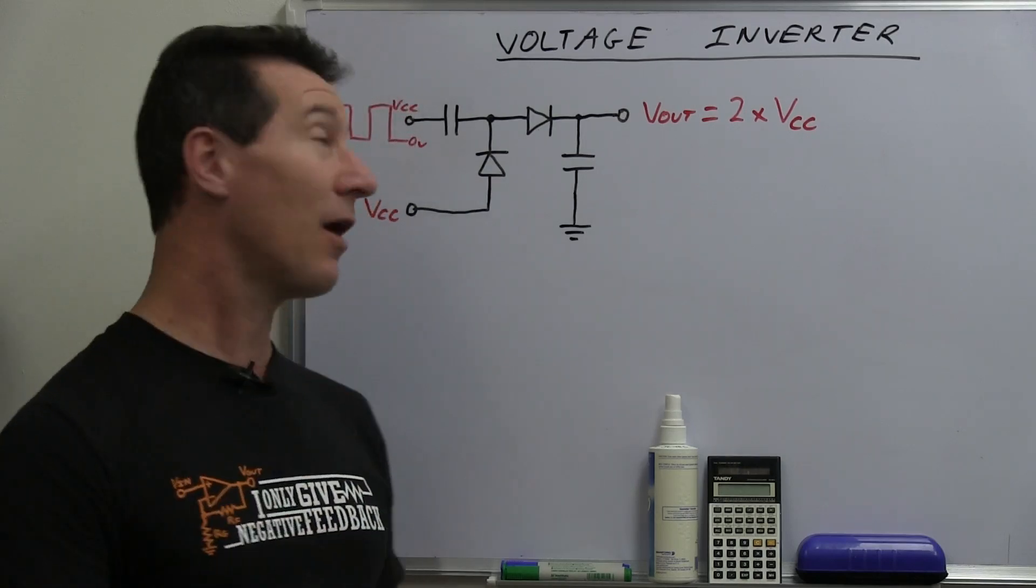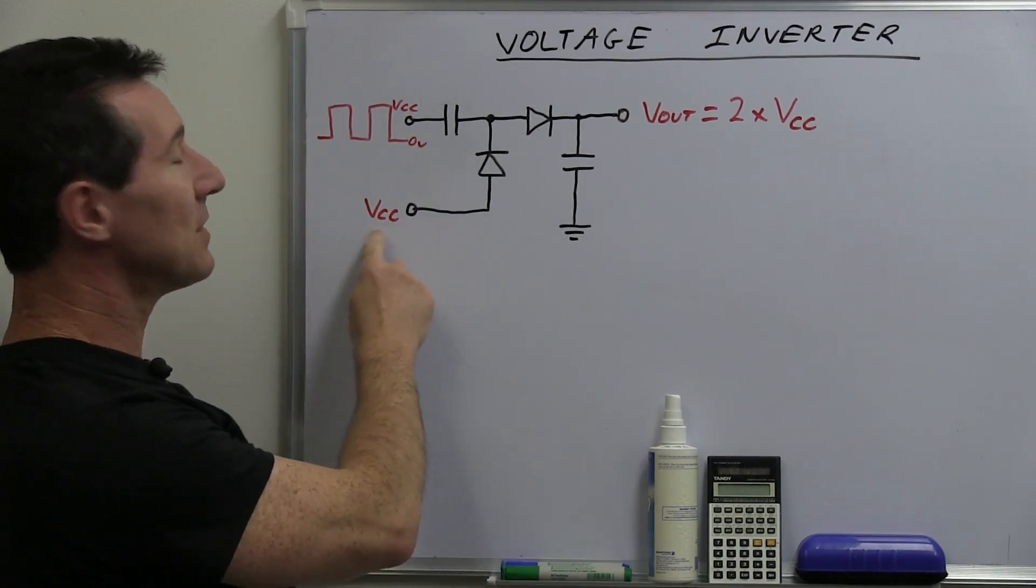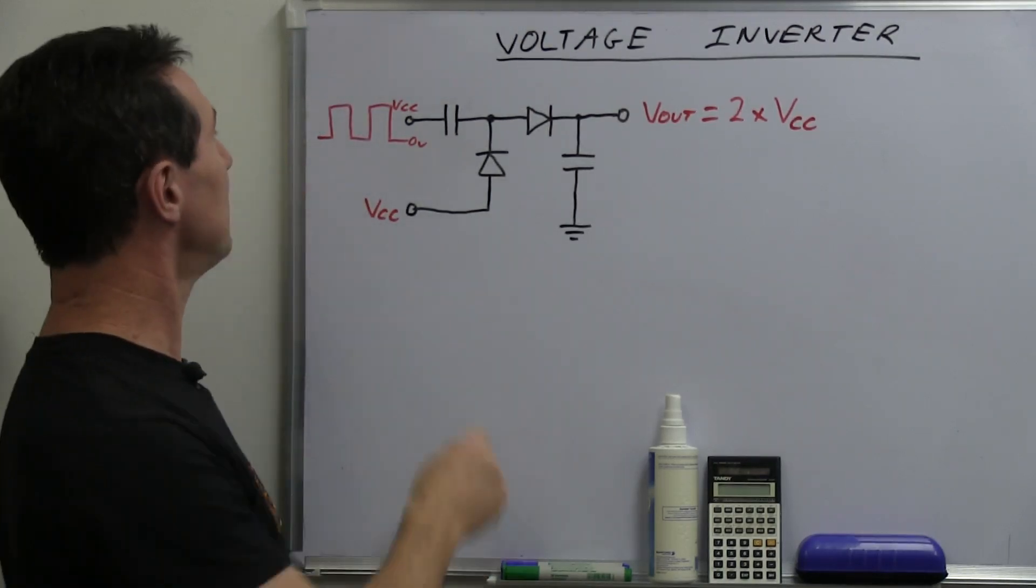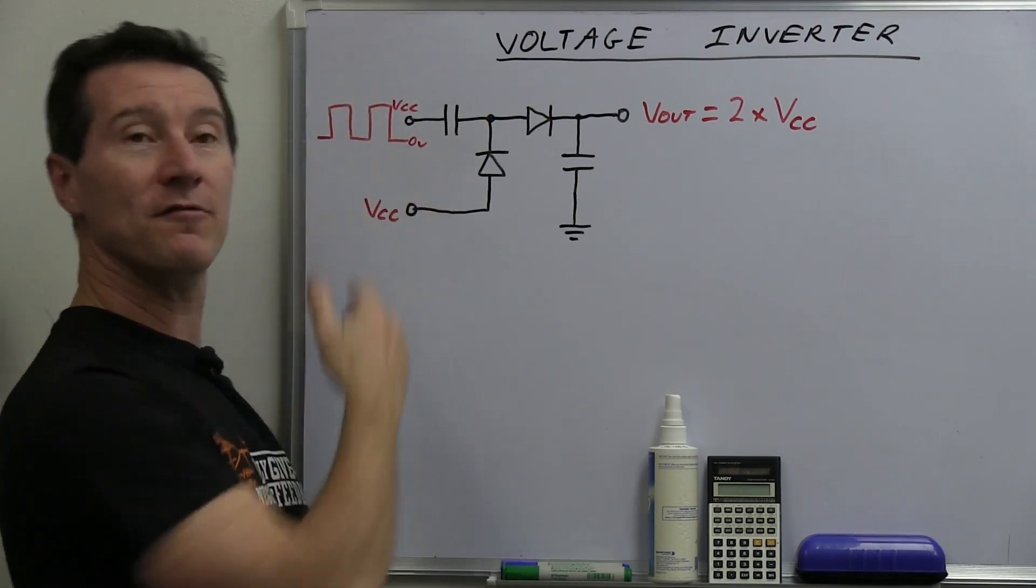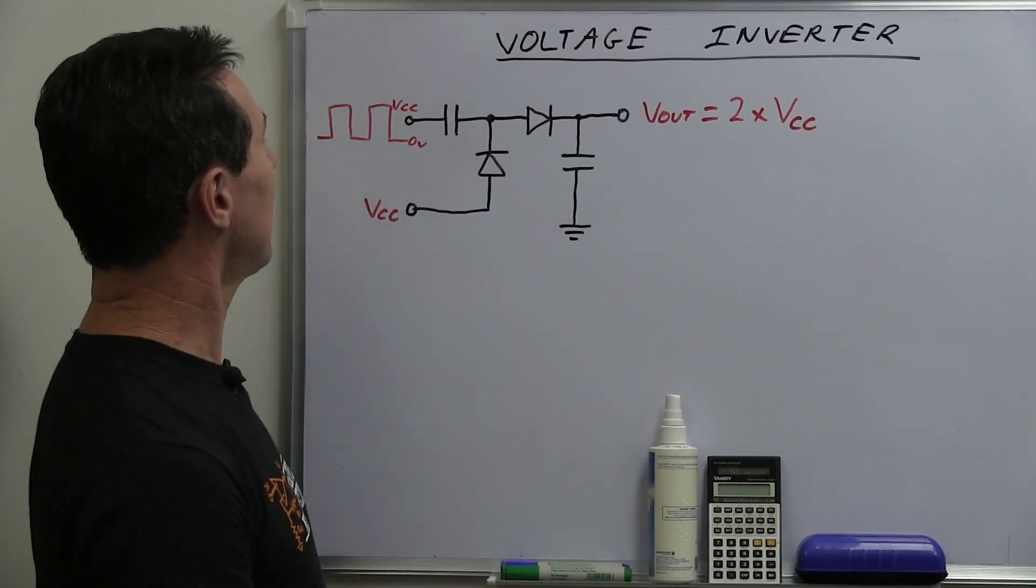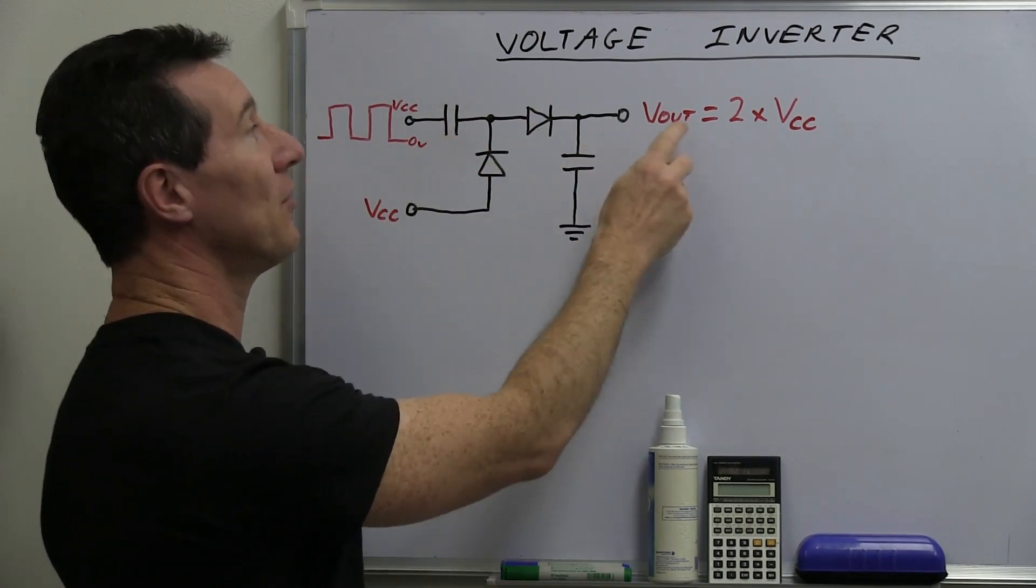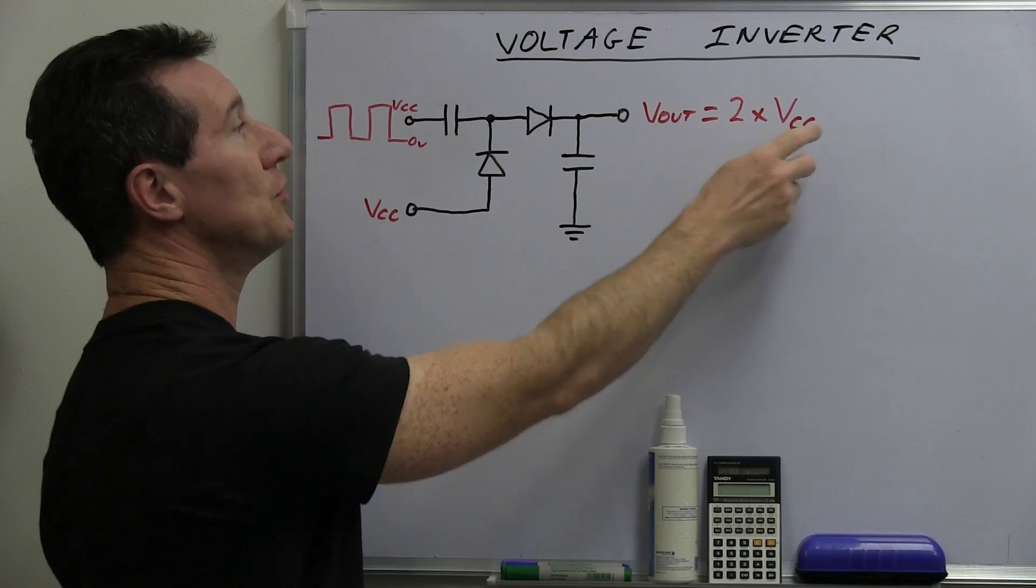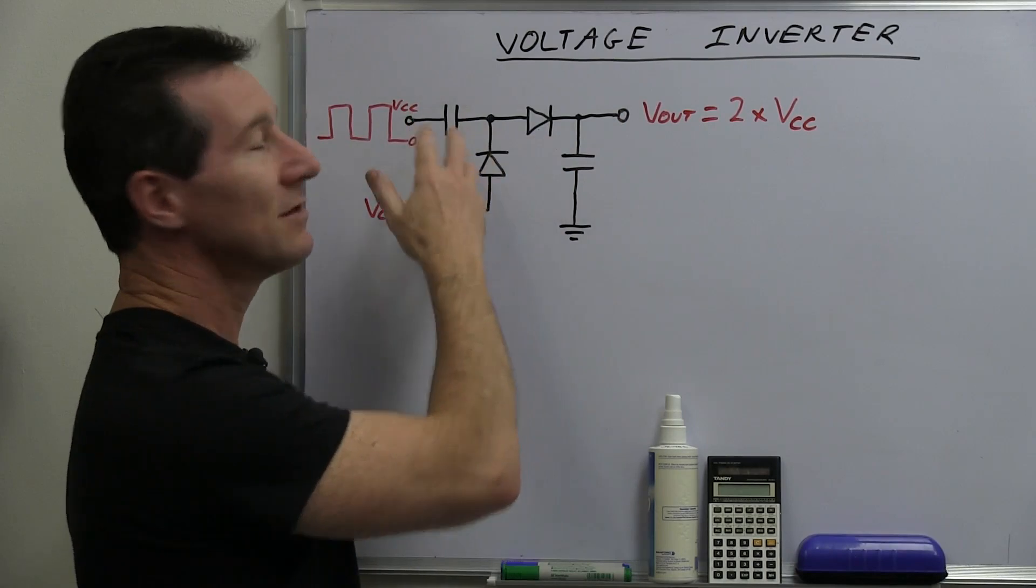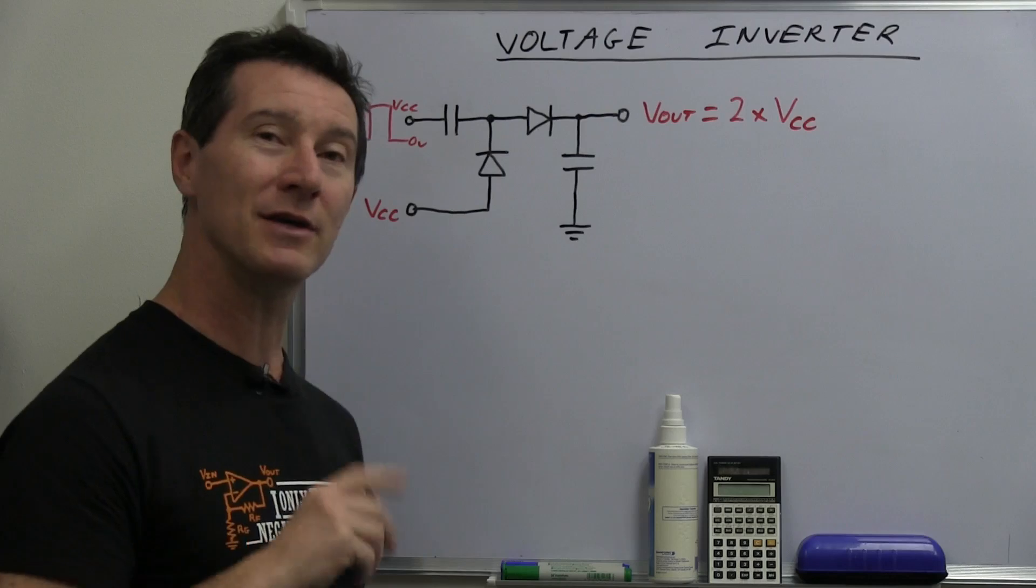So this is what we had previously with the Dixon doubler. We had our VCC voltage - it might be 5 volts or 3.3 volts or whatever your system voltage is. And then we feed in a square wave from our microcontroller. It doesn't have to be from a micro, could be from something else. And based on the Dixon doubler here with the output filter, the output voltage is Vout equals 2 times VCC.